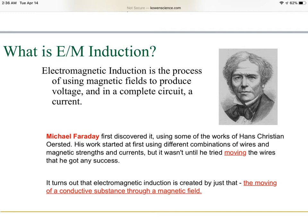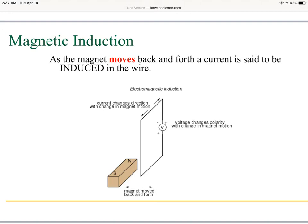It turns out that electromagnetic induction is created by moving a conductive substance through a magnetic field. Electromagnetic induction is the process of using magnetic fields to produce voltage, and in a complete circuit, a current. Looking at how magnetic induction works, if we take a magnet and move it back and forth, a current is said to be induced into the wire.